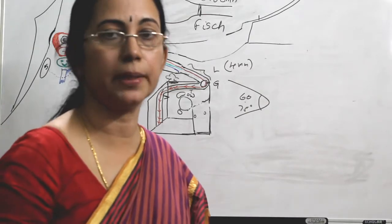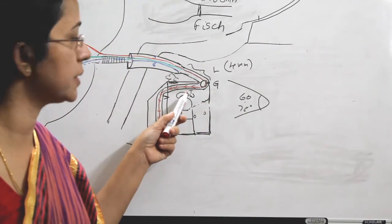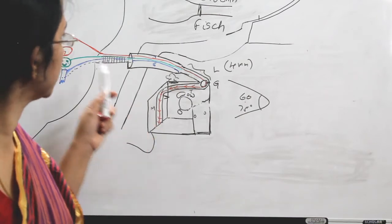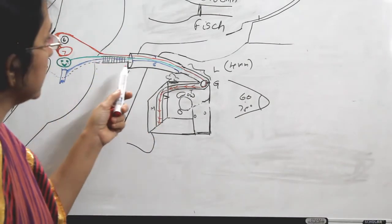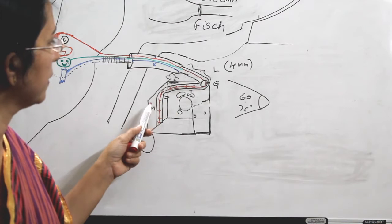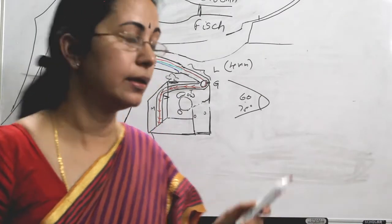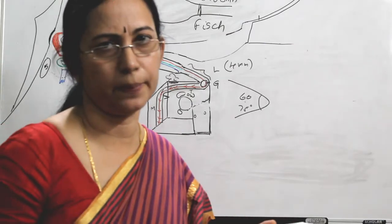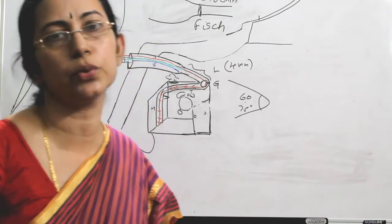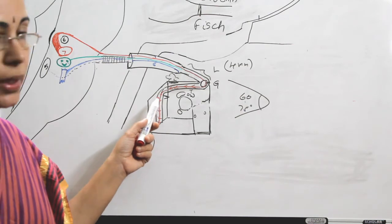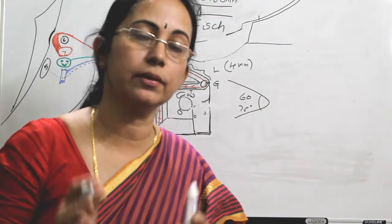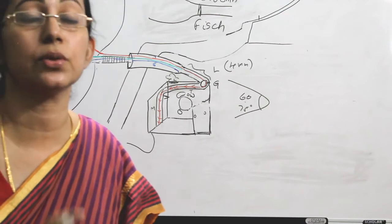This segment is otherwise called the mastoid segment — or the vertical segment. So: meatal segment, labyrinthine segment, tympanic segment (the horizontal), and mastoid segment (the vertical). Very easy to remember. At the level of the pyramid, the horizontal part reaches the posterior wall and starts its downward course. One more relation in the downward course: the short process of the incus is always lateral to the facial nerve. Remember that.